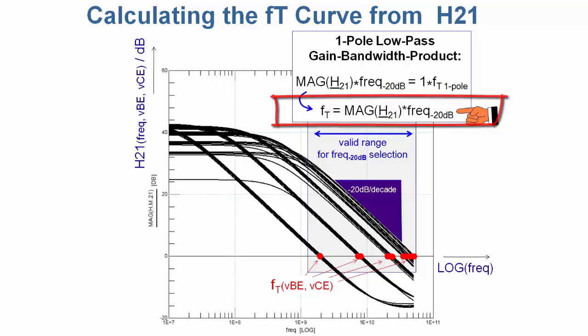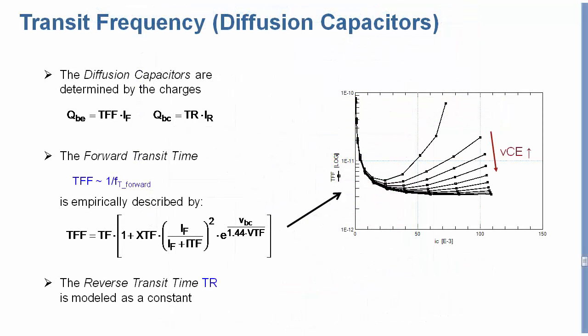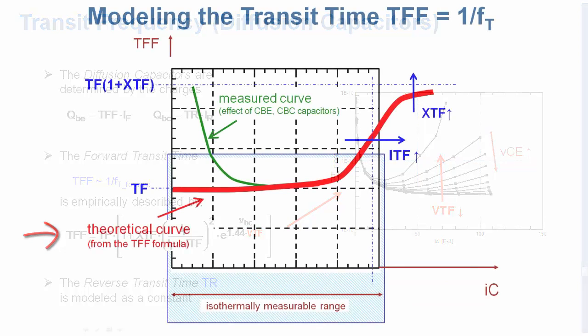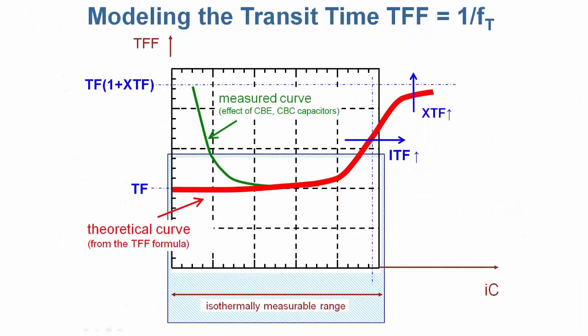We then take the inverse of this FT curve and get the transit time TFF, which has to be fitted by the Gummel-Poon equation as shown here. For a single collector voltage, our parameter fitting problem simplifies to a single curve. In this curve, the Gummel-Poon parameter TFF models the lowest value of the transit time, XTF models the endpoint at highest bias, and ITF relates to the bias current of the transition range.